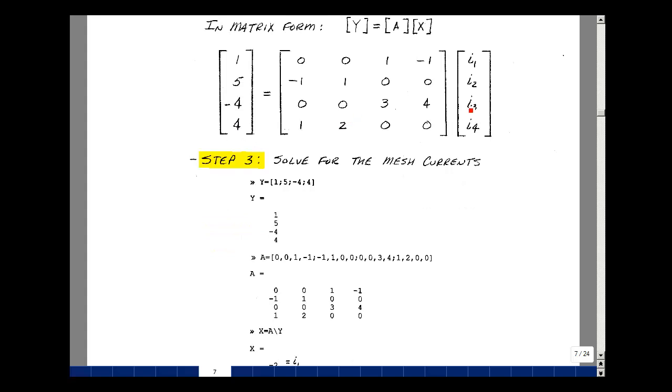Call this Y is equal to A times X. We have a mixture of units here, so I'm just going to use some general symbols. This vector over here is going to be 1, 5, minus 4, and 4, semicolon separating them. Hit enter, and you can see the entries match what I have here.